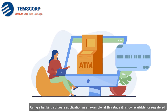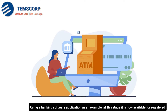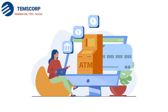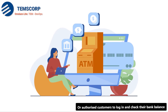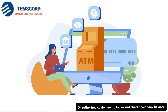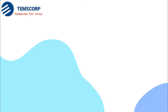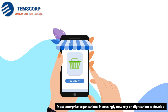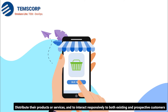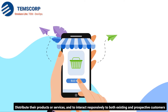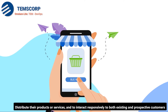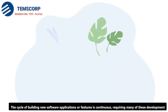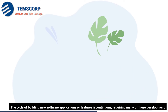Then, if it works properly, you copy it over to the production platform or environment. Using a banking software application as an example, at this stage it is now available for registered or authorized customers to log in and check their bank balance. Most enterprise organizations increasingly rely on digitization to develop and distribute their products or services and to interact with both existing and prospective customers.